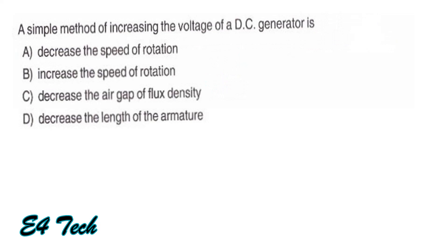A simple method of increasing the voltage of a DC generator is to increase the speed of rotation. The options were: decrease the speed of rotation, increase the speed of rotation, decrease the air gap flux density, or decrease the length of the armature.